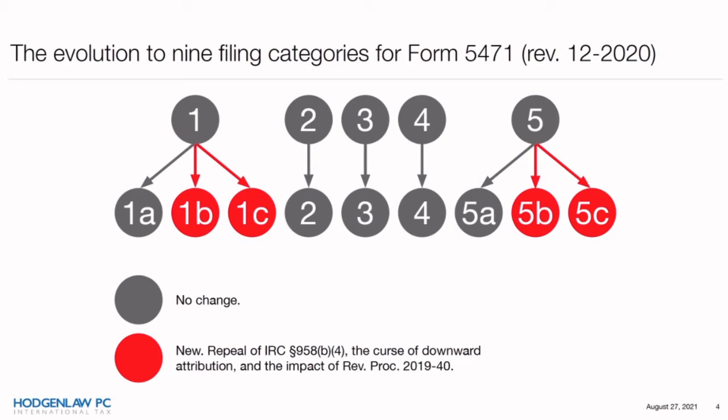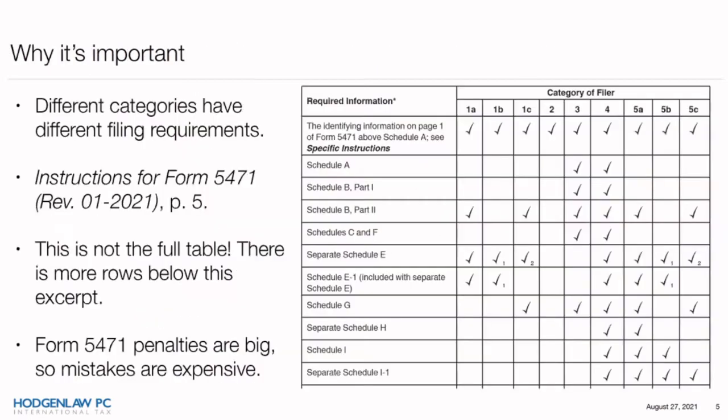The repeal created situations where a U.S. taxpayer might become a U.S. shareholder of a controlled foreign corporation secretly, because of attribution through foreign entities. Rev Proc 2019-40 attempted to deal with problems faced by people sideswiped by downward attribution. Categories 1B, 1C, 5B, and 5C were added to reduce the information requirements and the schedules that must be filed for Form 5471, on the theory that these people might not have access to all the data they need.